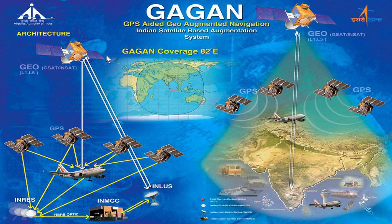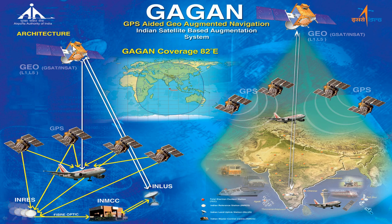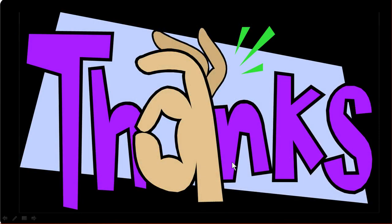GAGAN stands for GPS Aided Geo Augmented Navigation and is India's satellite-based augmentation system. The architecture, developed jointly by the Airport Authority of India and ISRO, includes GSAT/INSAT satellites, INRES stations, Master Control Center, and Land Uplink Stations connected by fiber optic cable, serving aircraft as well as other industries such as shipping, transport, agriculture, and railways. All content for this presentation is freely available from the internet and nothing is confidential.